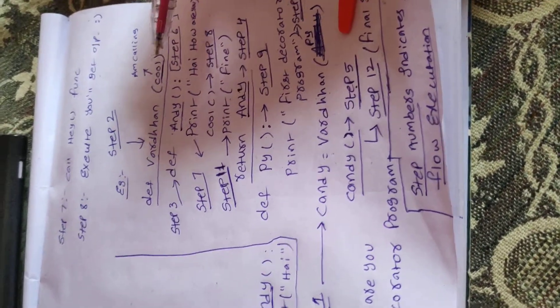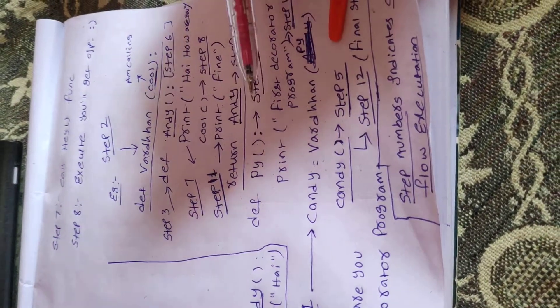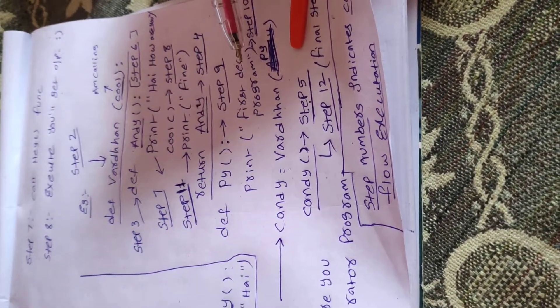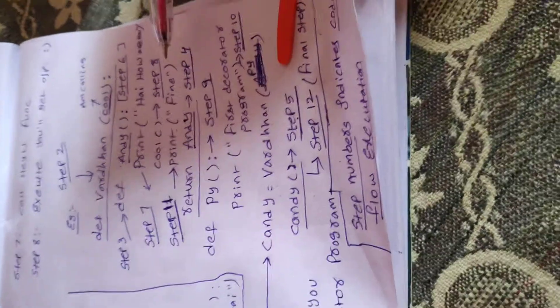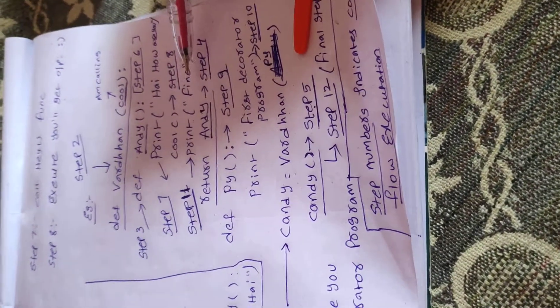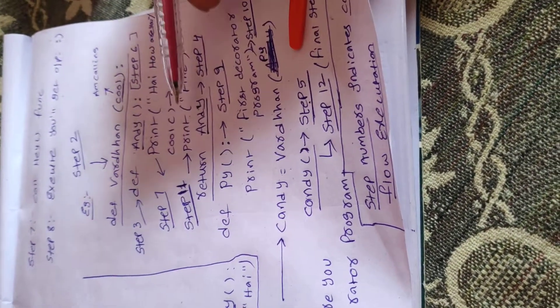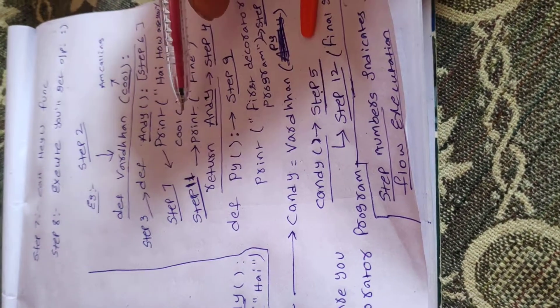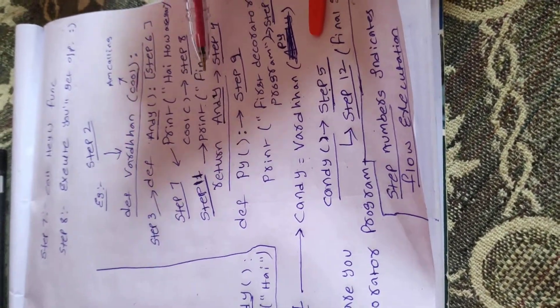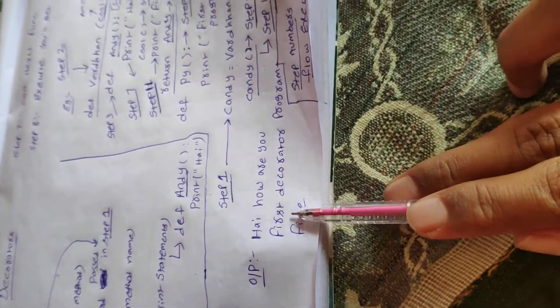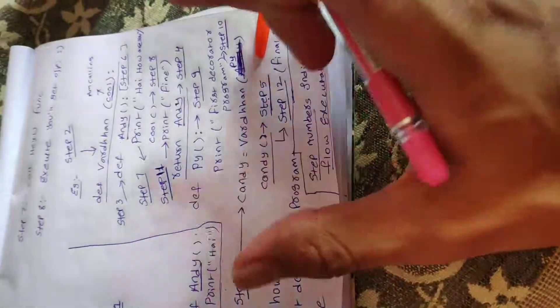It will print the values which are present inside this py function. We can see at step eight it will be calling our cool argument name and it will come to step nine, def py, so it will print the statement 'first decorator program'. After that it will be moving on to the cool method and it will print the statement which is present inside this cool argument function — it will print 'fine'. So the output is: 'hi how are you', 'first decorator program', and 'fine'. This is only the theoretical part — now I'll be showing you the exact code in my terminal.